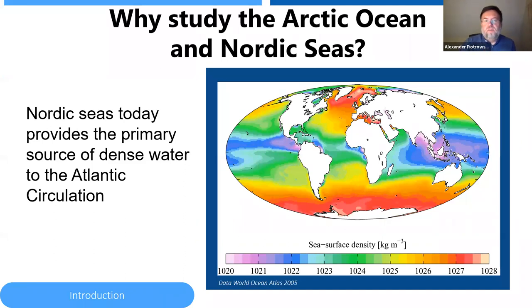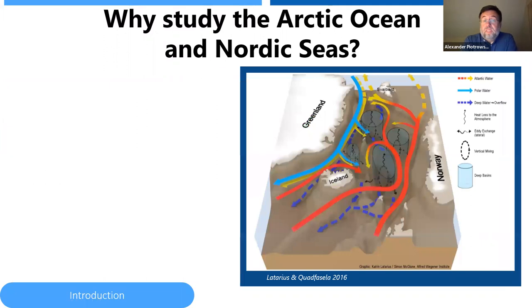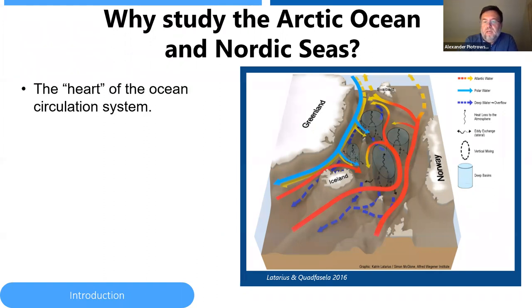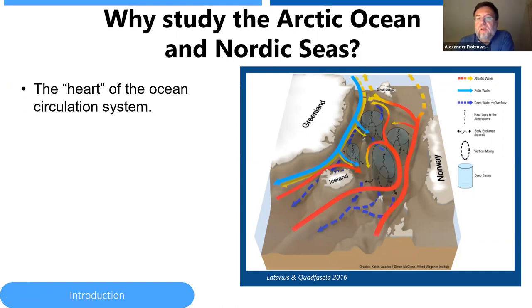So why study the Arctic Ocean and Nordic seas? As we saw before, the Nordic seas today is where we form the deep, dense waters that start this Atlantic overturning circulation. In a sense, the Nordic seas is like the heart of this ocean overturning system. Here we have Greenland to the east, Norway to the west, Svalbard up in the north, and Iceland at the south. We can see very cold waters coming out of the Arctic mixing with red water masses — the remnants of the Gulf Stream, which are very salty waters that initially started very warm but have released their heat to the atmosphere and become colder. Mixing this very cold, salty water produces dense waters, and that happens at convection systems throughout the Nordic seas, especially near Svalbard itself.